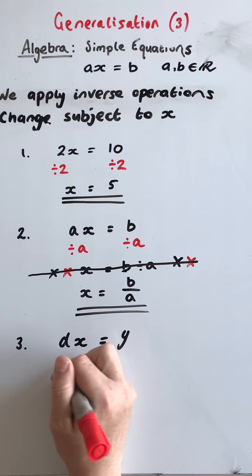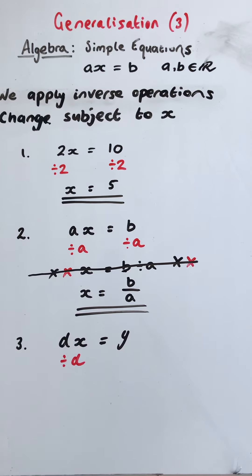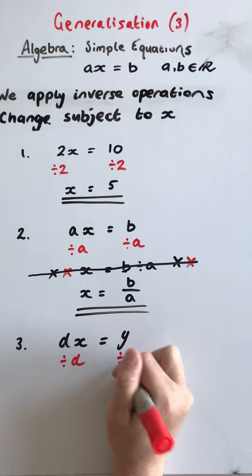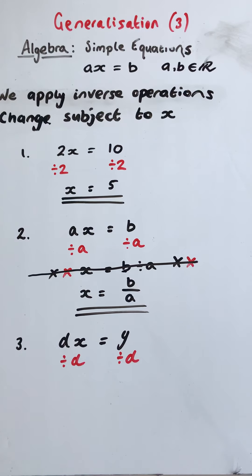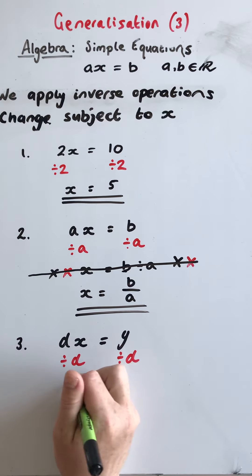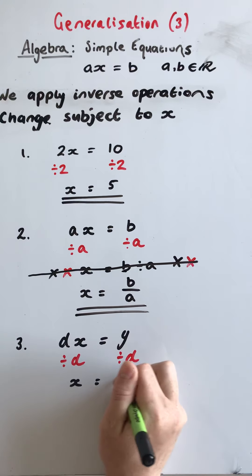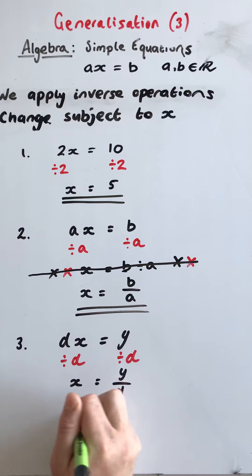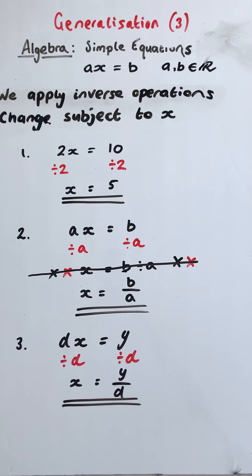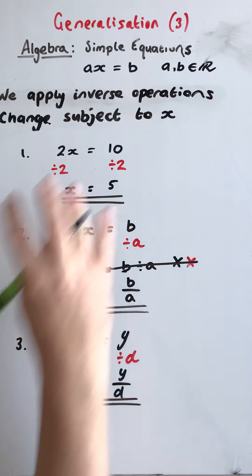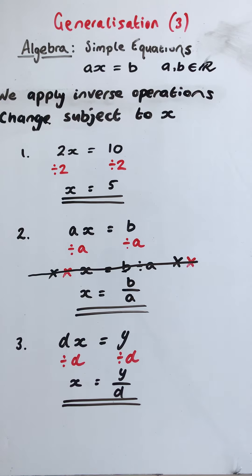The multiplicative inverse is division. What we do to the left hand side, we must also do to the right hand side. d divided by d is 1. We're not going to write that one. y divided by d. We're not going to write it like this. We're going to write it as a fraction. So there we go. There's a generalization of this exercise that you've done there.